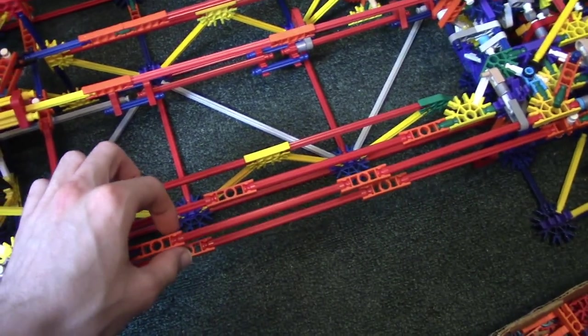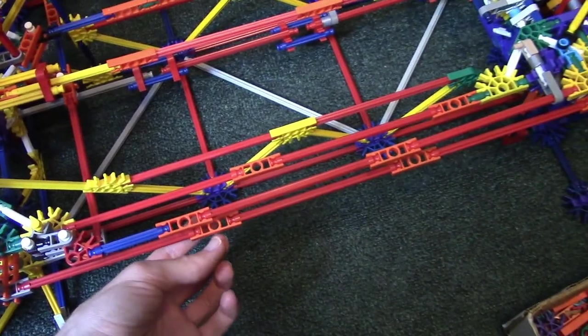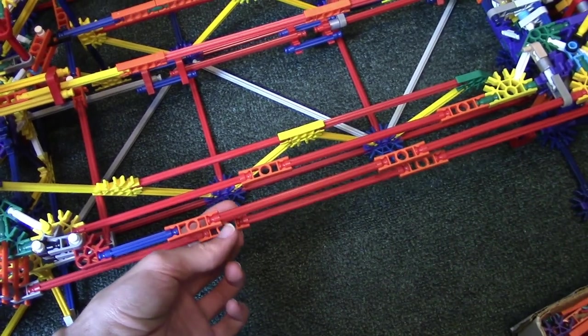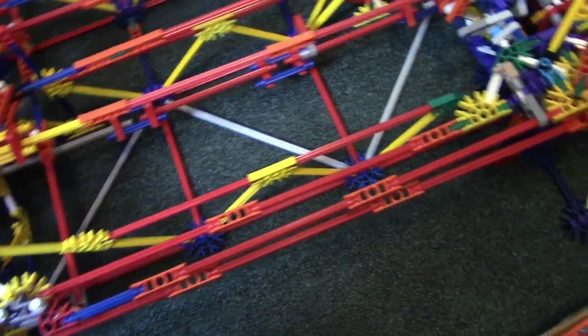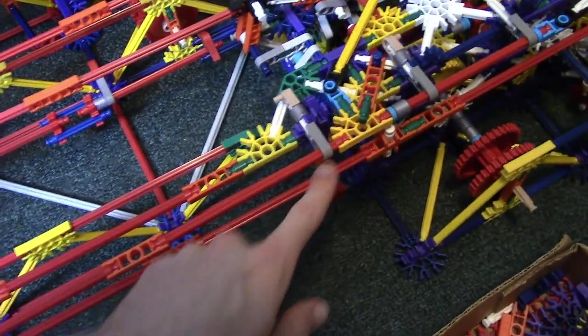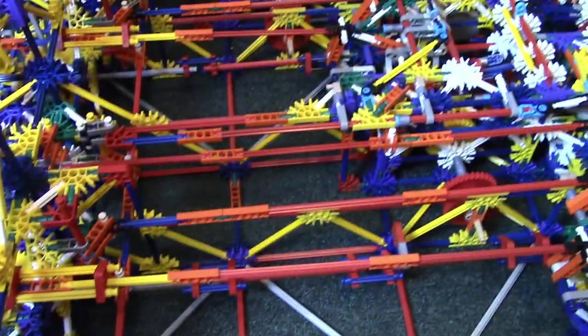One of the things I still need to do is secure these linkages a little bit because this one for example is three red rods long and we don't want that shaking at all. So I'll probably just make supports like that going all the way down on all of these.